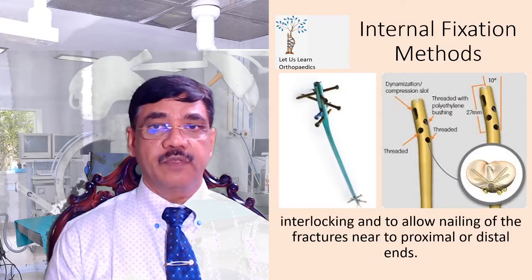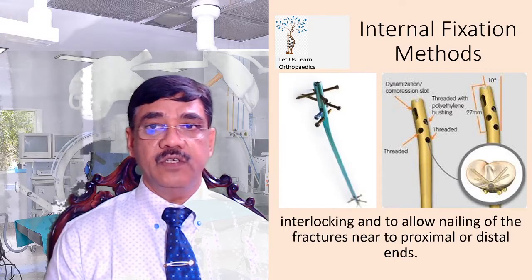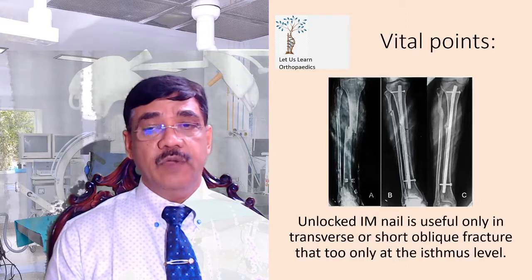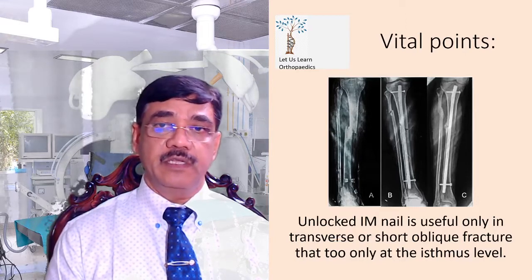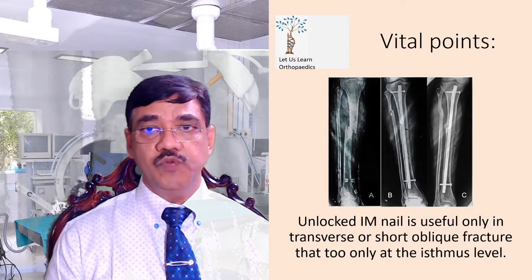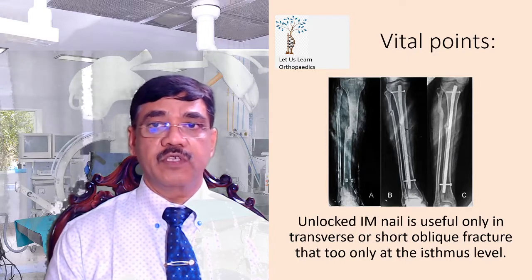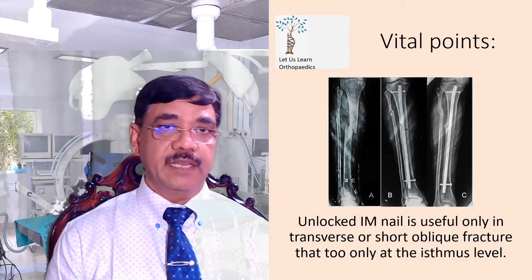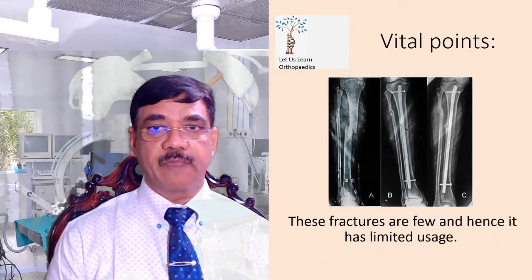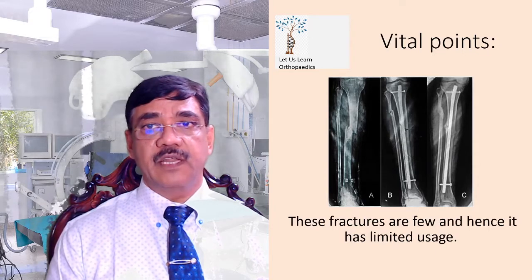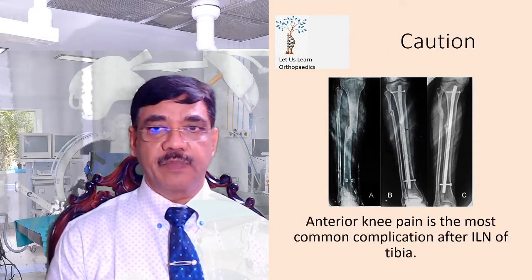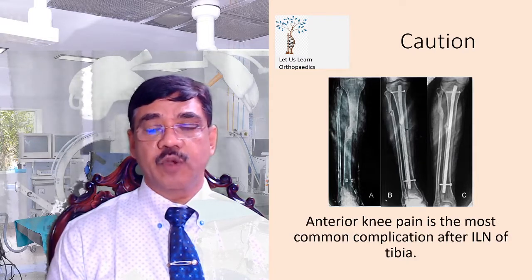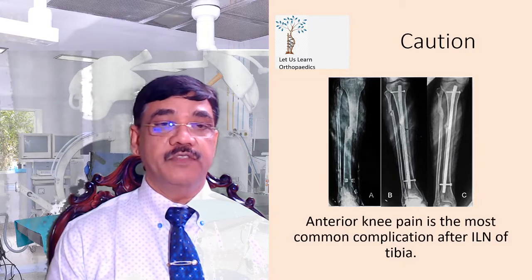New generation nails are emerging as effective alternatives, with multiple holes in different planes to maximize interlocking options and allow nailing of fractures near the proximal or distal ends. An important point: intramedullary interlocking nail is useful only in transverse shaft oblique fractures, short oblique fractures, and only at the isthmus level. These fractures are few and hence it has limited uses. Anterior knee pain is the most common complication after interlocking nailing of the tibia.